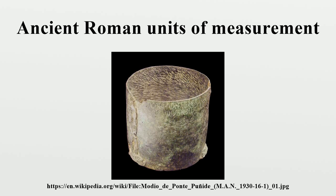The Romans grouped days into an eight-day cycle called a nundina, with every eighth day being a market day. Independent of the nundinae, astrologers kept a seven-day cycle called a hebdomada, where each day corresponded to one of the seven classical planets. The first day of the week was Saturn day, followed by Sun day, Moon day, Mars day, Mercury day, Jove day, and lastly Venus day.